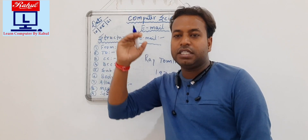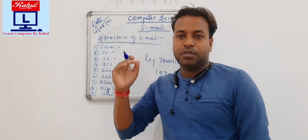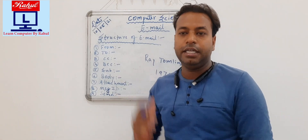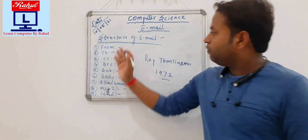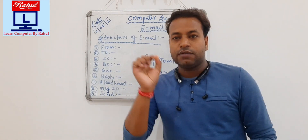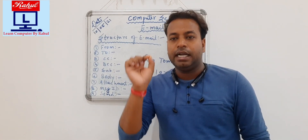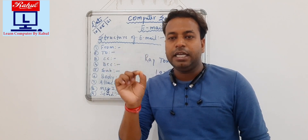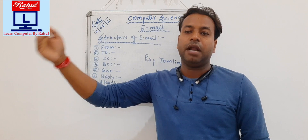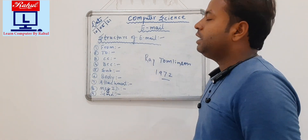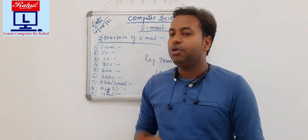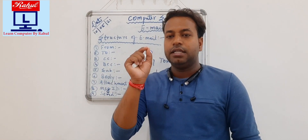Now we will look at the structure of email. Structure means how the email is made — what are the steps and what is the structure we need to follow before sending the email. The structure of email starts from the 'From' section. The From section contains the sender's email ID — that is, the person who is going to send the letter.